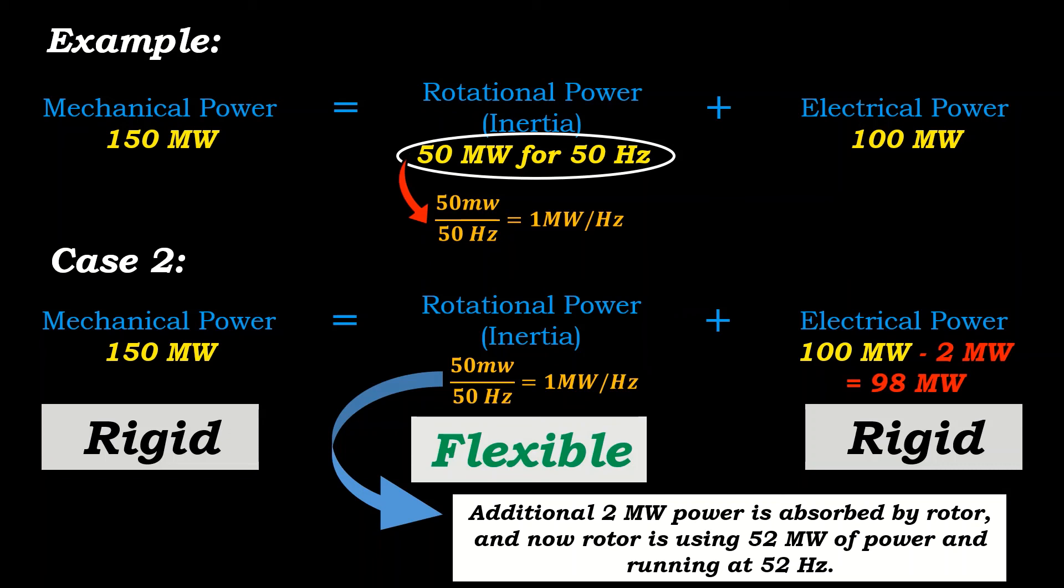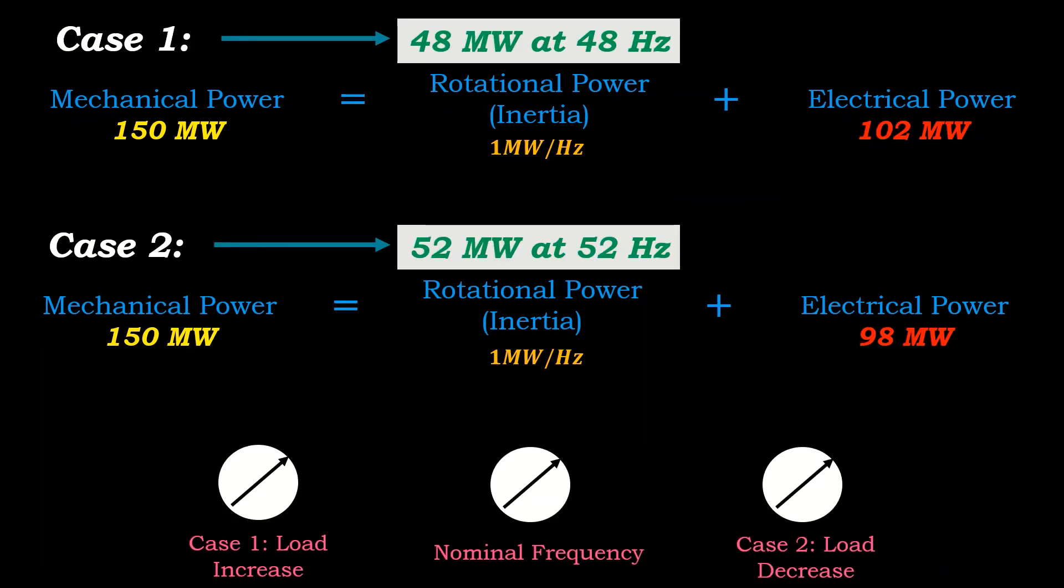So the extra power is consumed by the rotor and the frequency of system becomes 52 hertz. This case is analogous to a bicycle going downhill and the speed increases if the input pedaling power is not decreased.